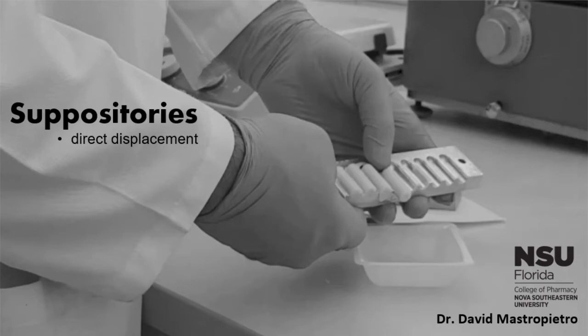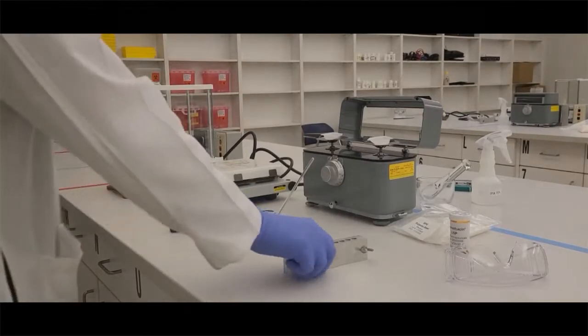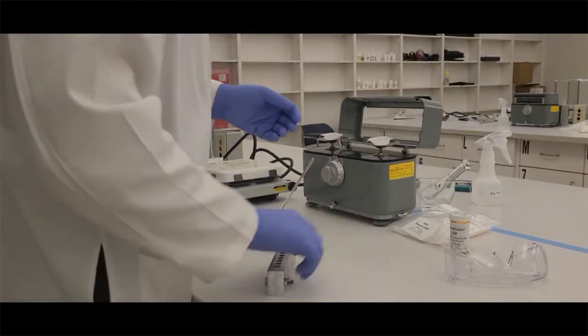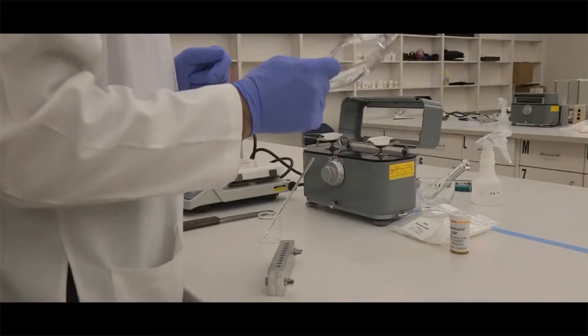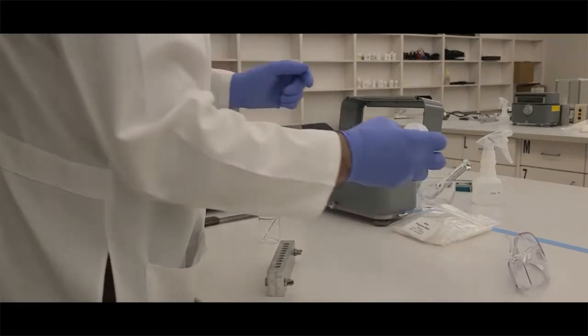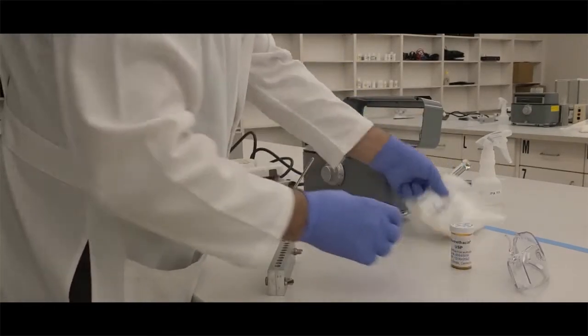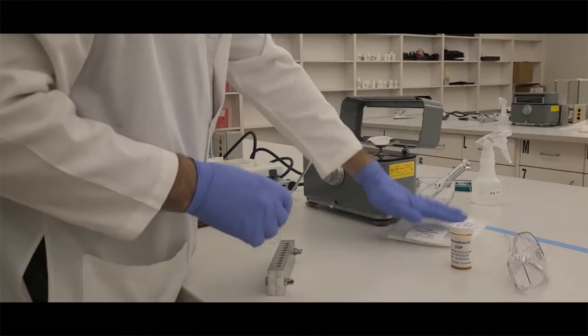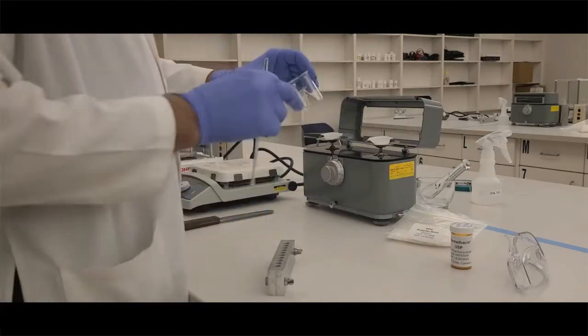This video is for suppositories using the direct displacement method. For this lab, we need a suppository mold—in this case, an aluminum mold. We'll need safety glasses because there's splash potential. We need our drug, indomethacin, and our suppository base, a fatty SPG base.